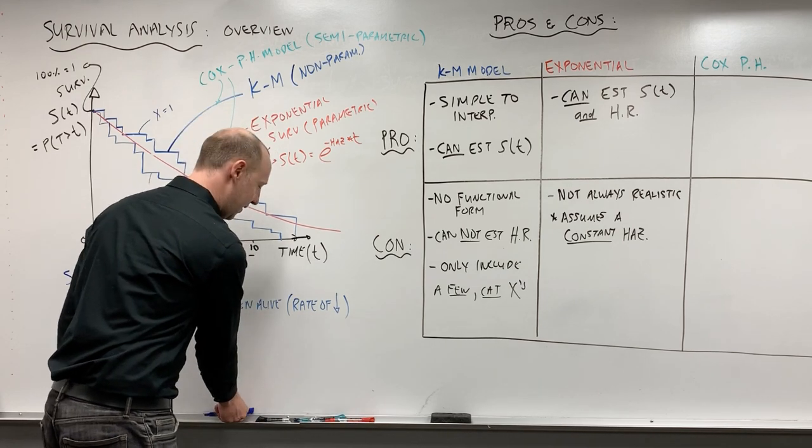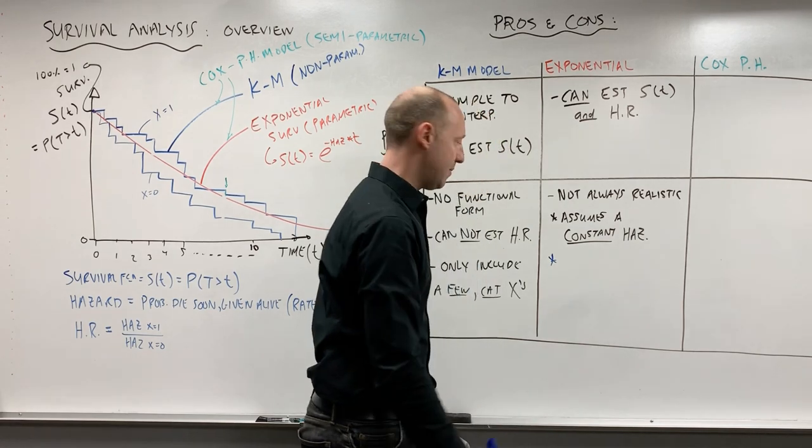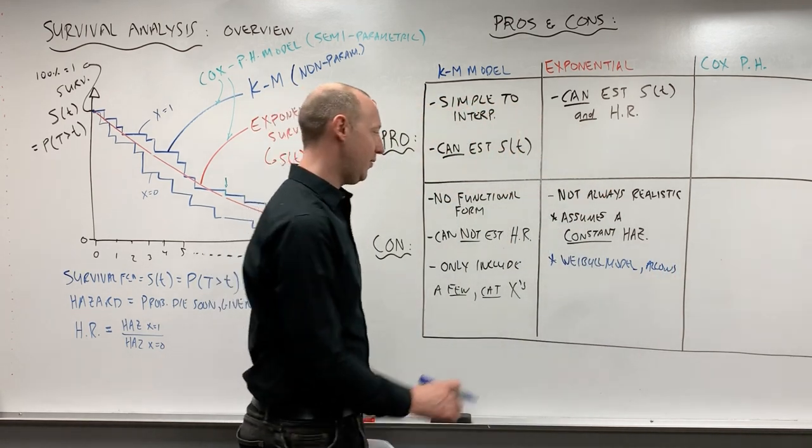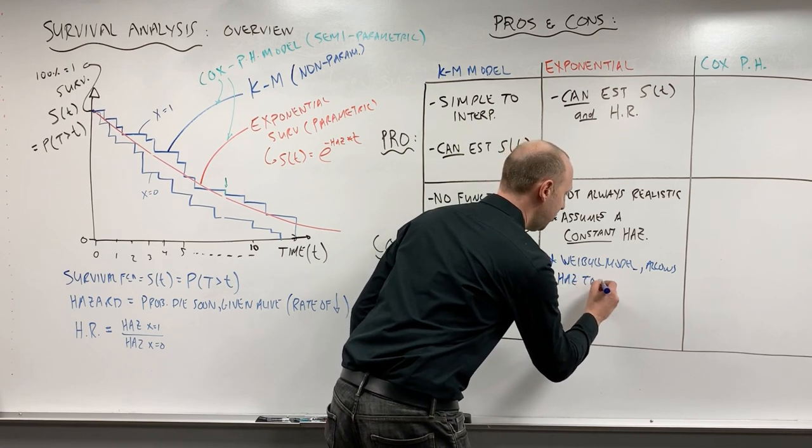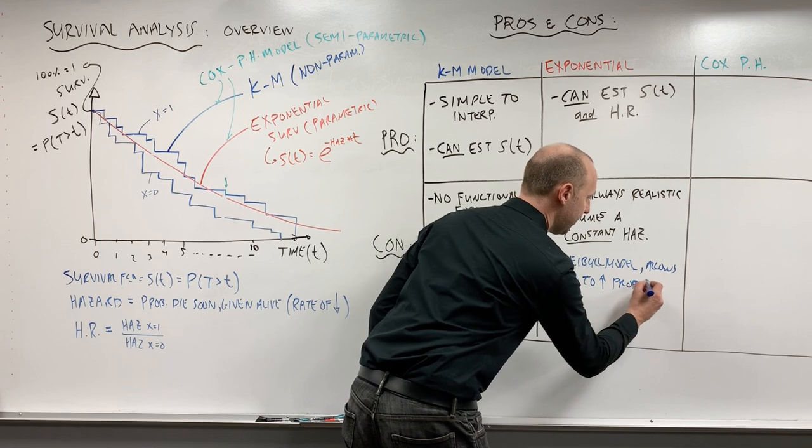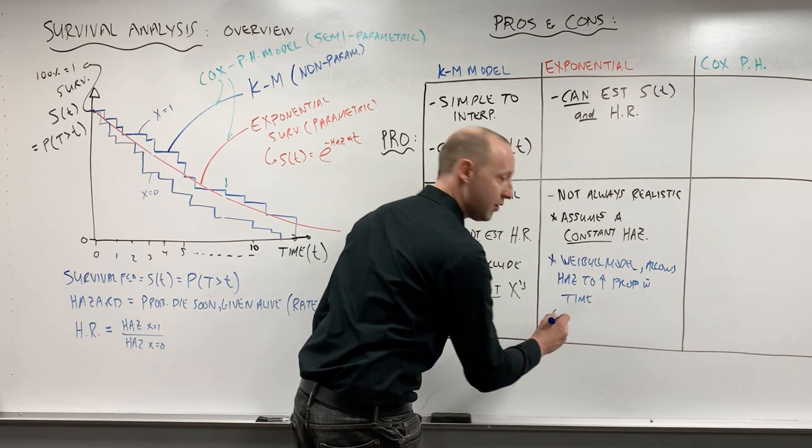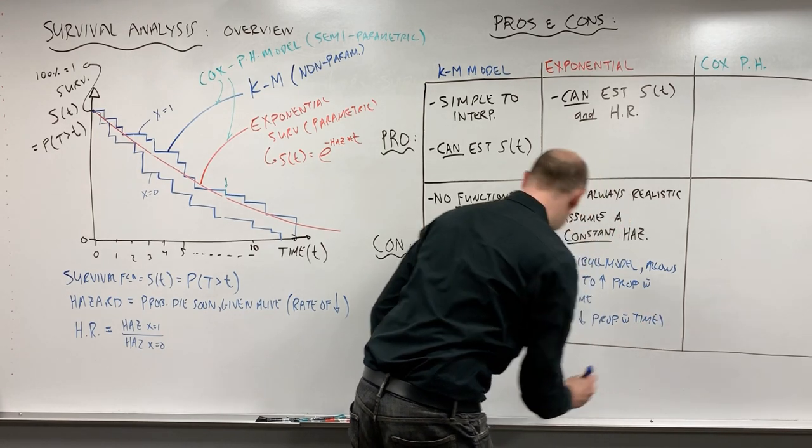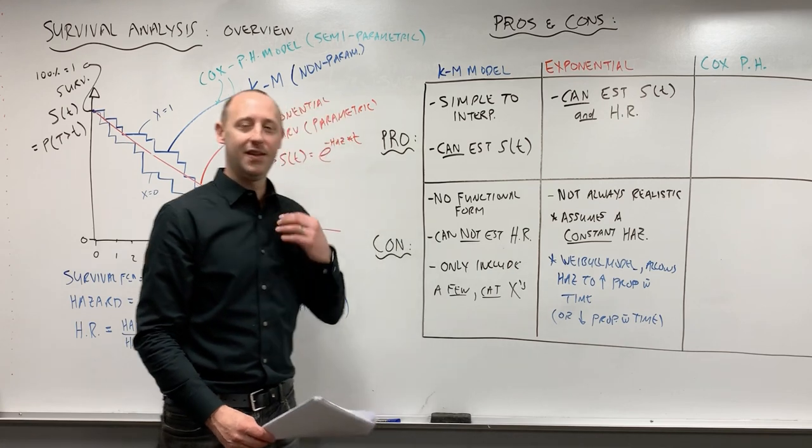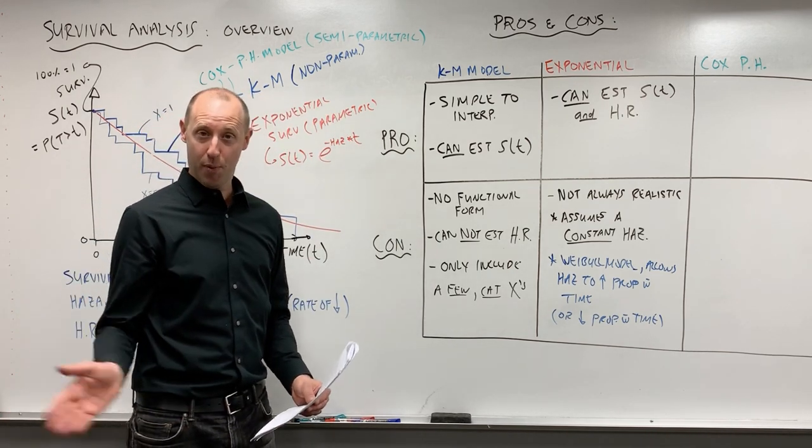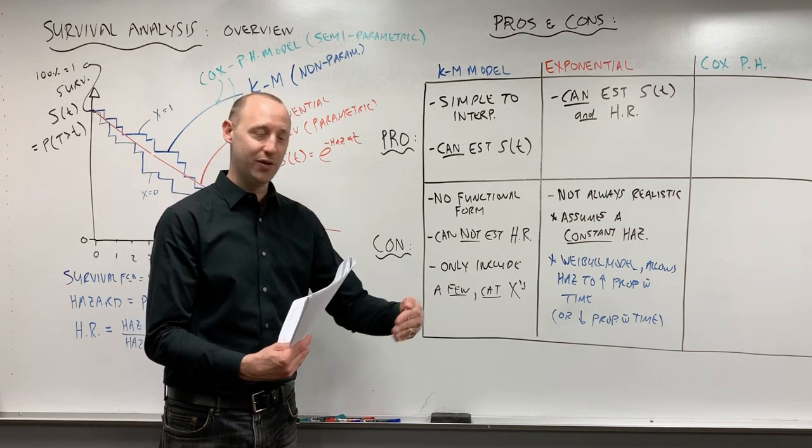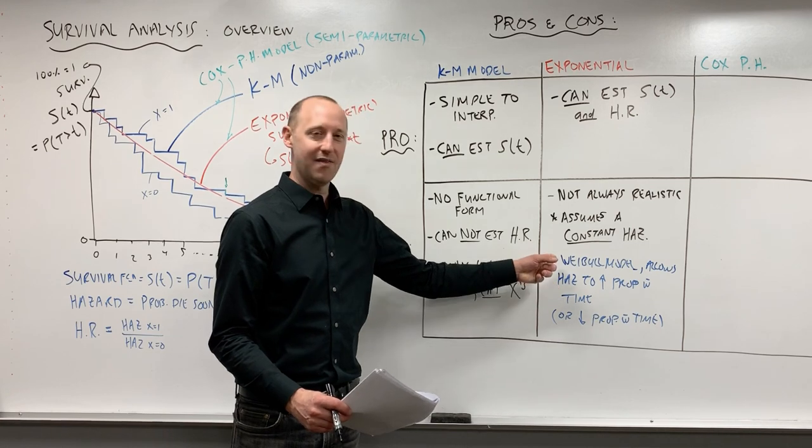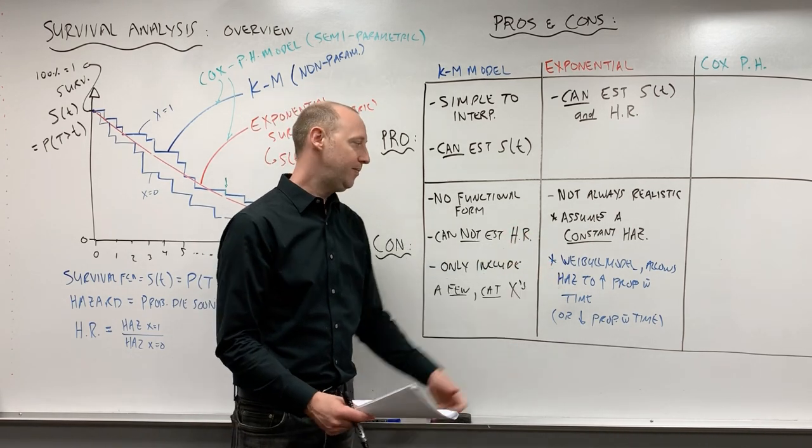There is one more I'm going to add in here. There's something called a Weibull model, and the Weibull model is still a parametric model, but it allows the hazard to increase proportionally with time, or it can decrease proportionally with time. So this is a bit of an improvement in that it allows the hazard as time goes by to increase proportionally with time. So every time time increases one unit, the hazard is going to increase by a certain amount. So that's getting a bit better.